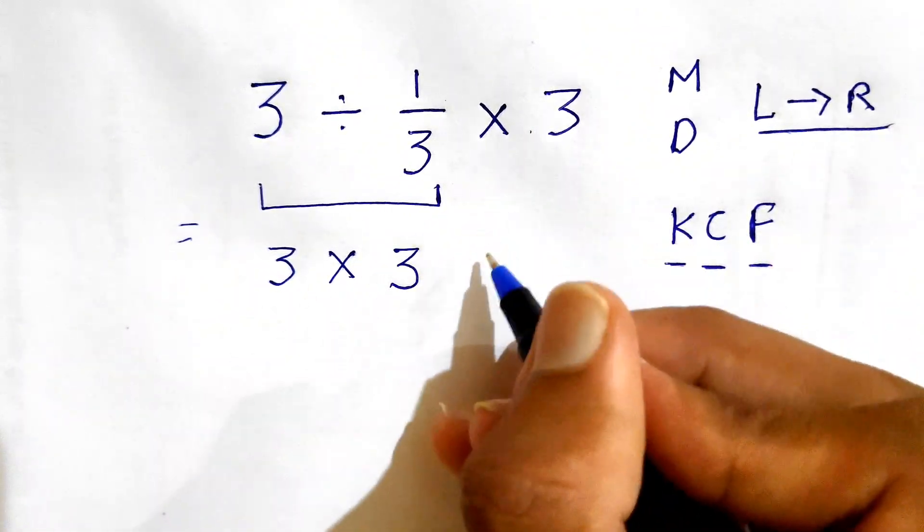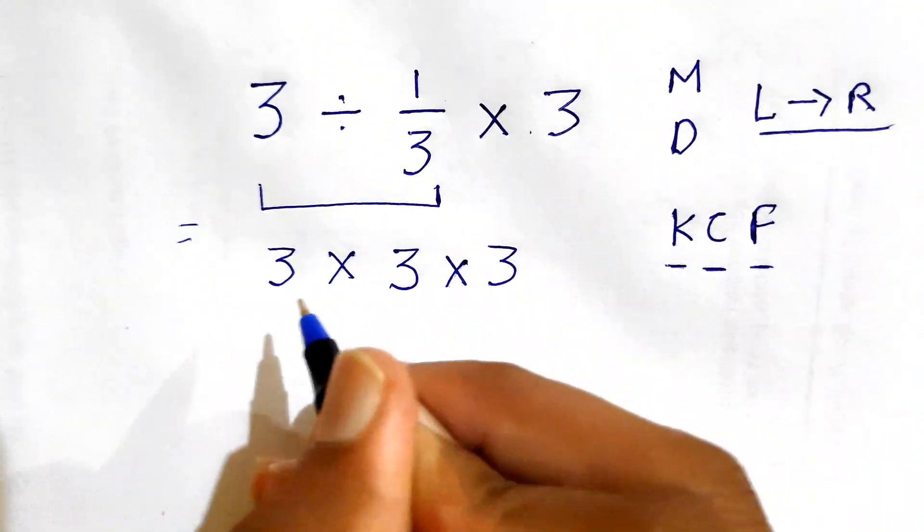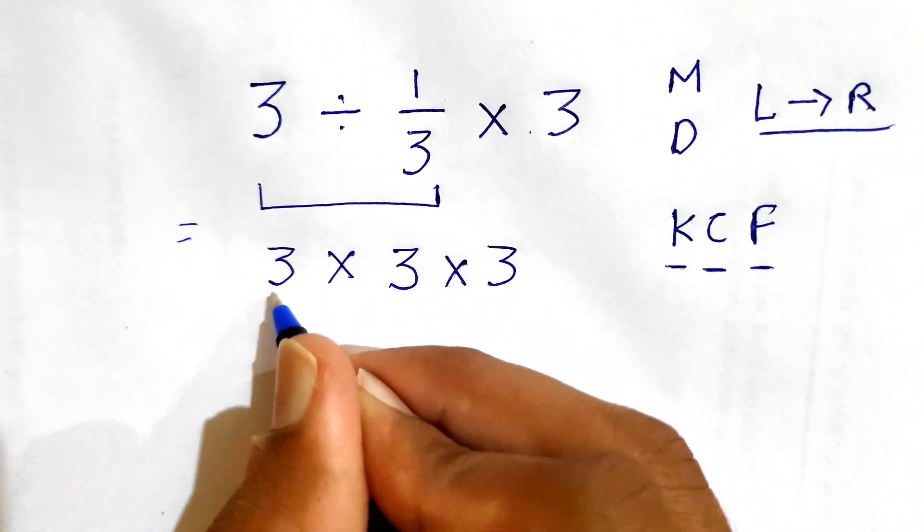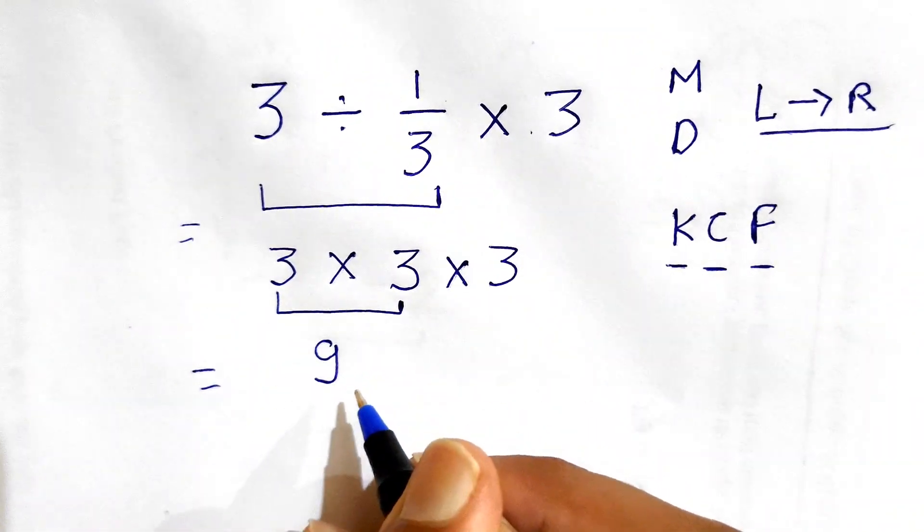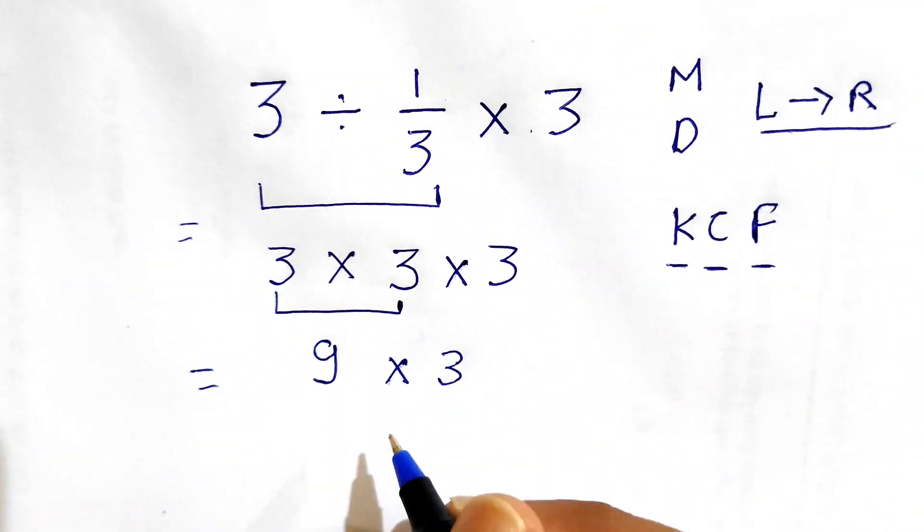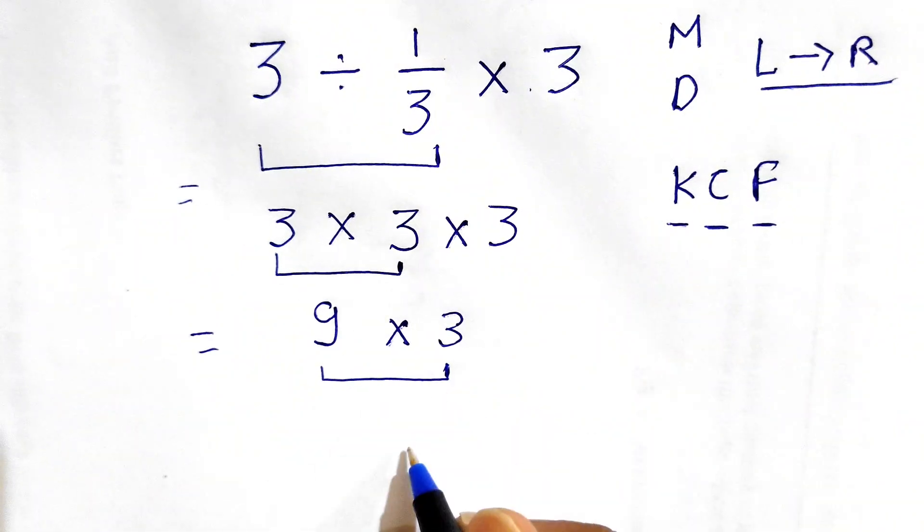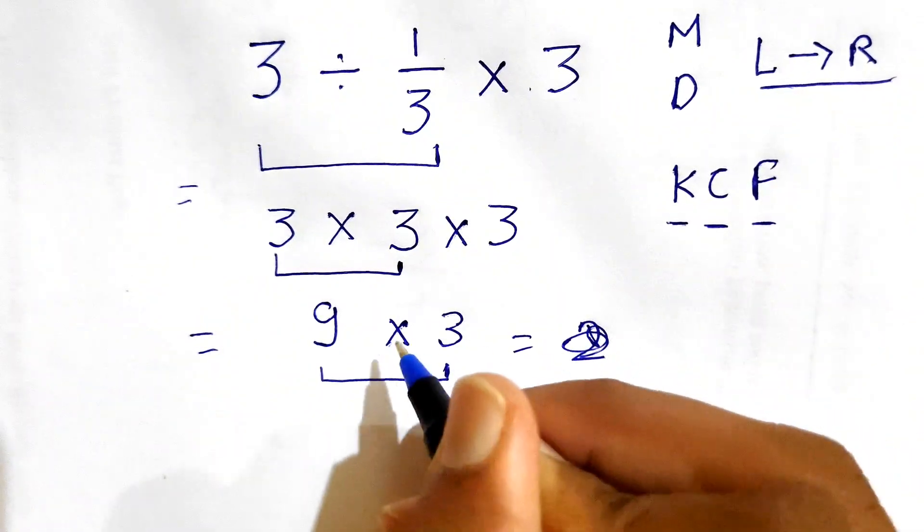Now we have 3 times 3 times this 3. It's become very simple for us to solve. We'll solve 3 times 3, which gives us 9, and then 9 times 3 gives the answer as 27.